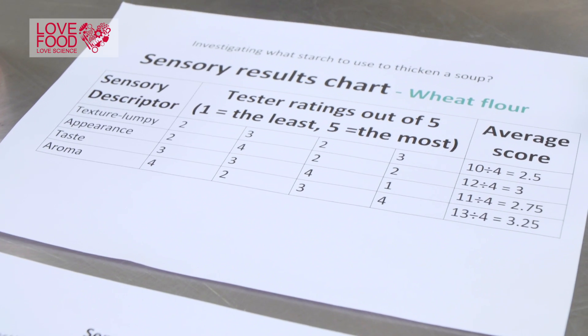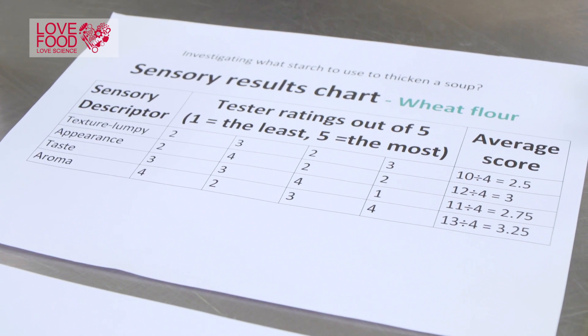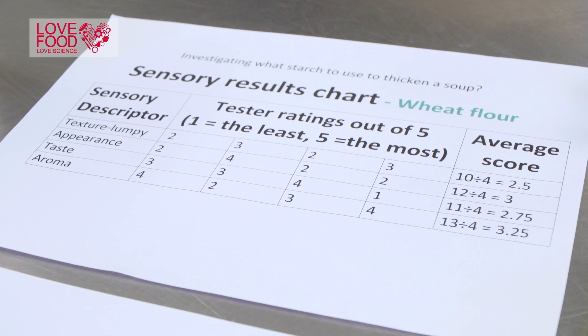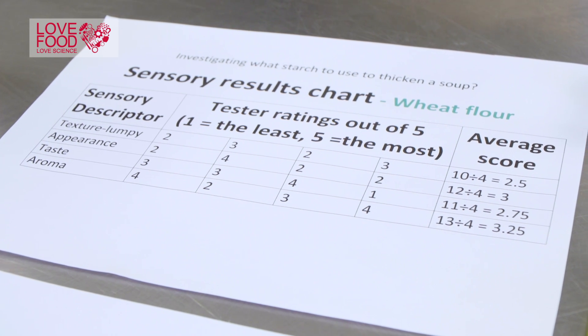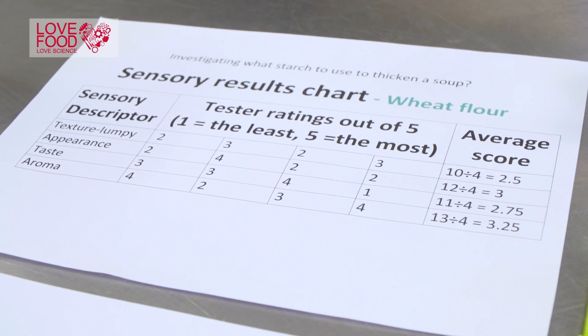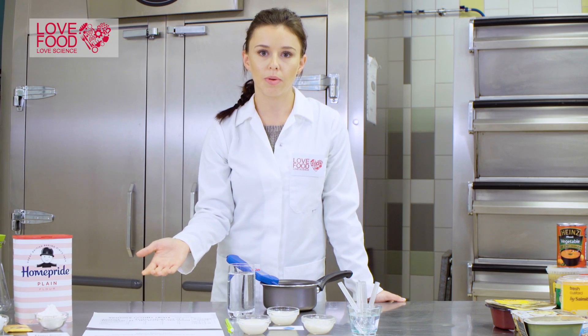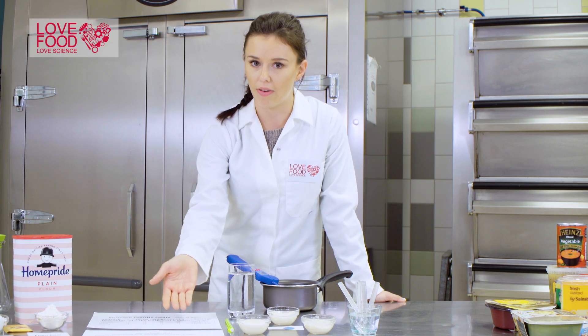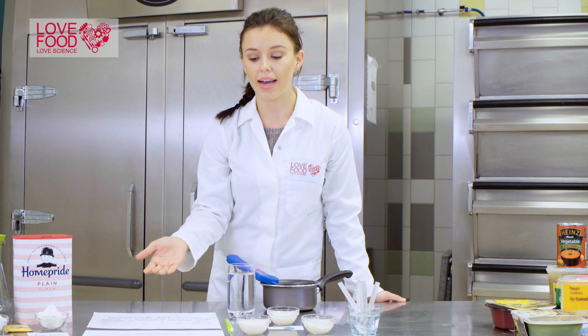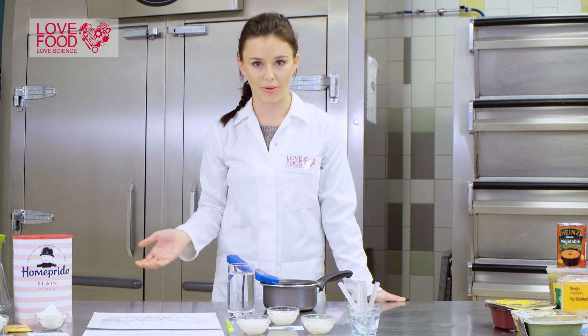Here we have descriptors of texture, appearance, taste and aroma, and then your consumers would rate these from one to five. You can work out which sample the consumers like the most.